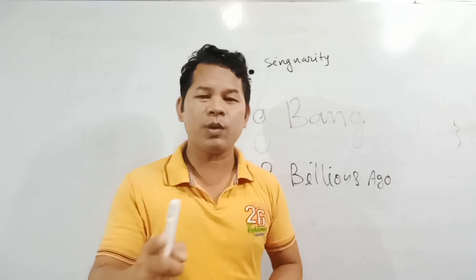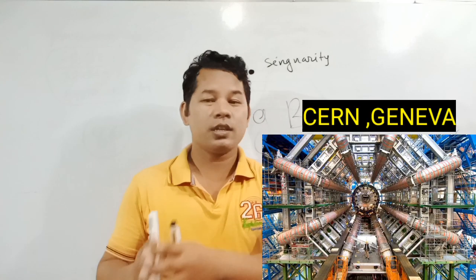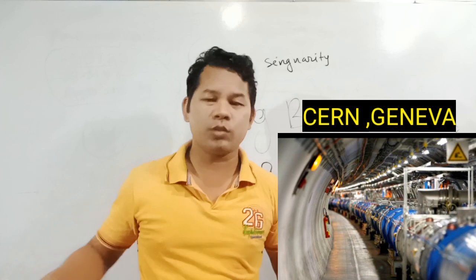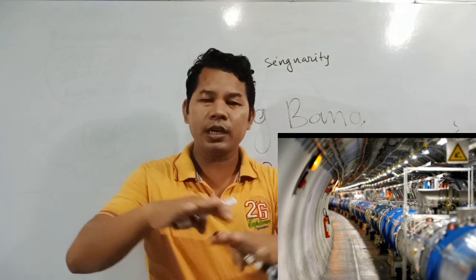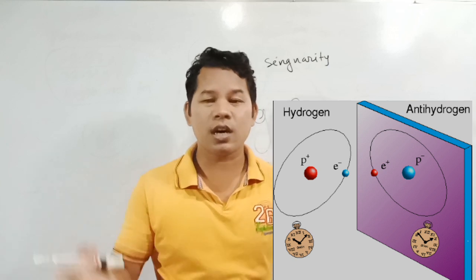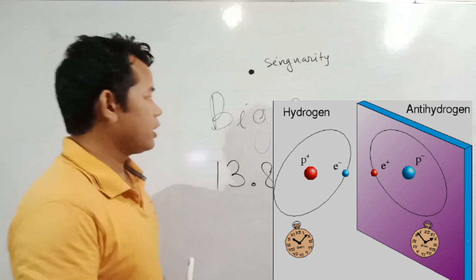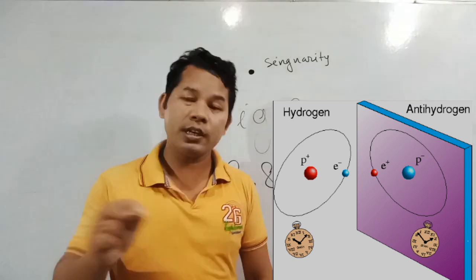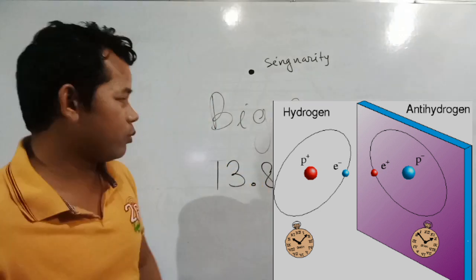In 1995 to 1996, in CERN, Switzerland, at the Large Hadron Collider, we had a laboratory. In this laboratory, there were experiments involving the universe — planets, stars, and more. In 1995 to 1996, anti-hydrogen was created. What do you think of these discoveries?